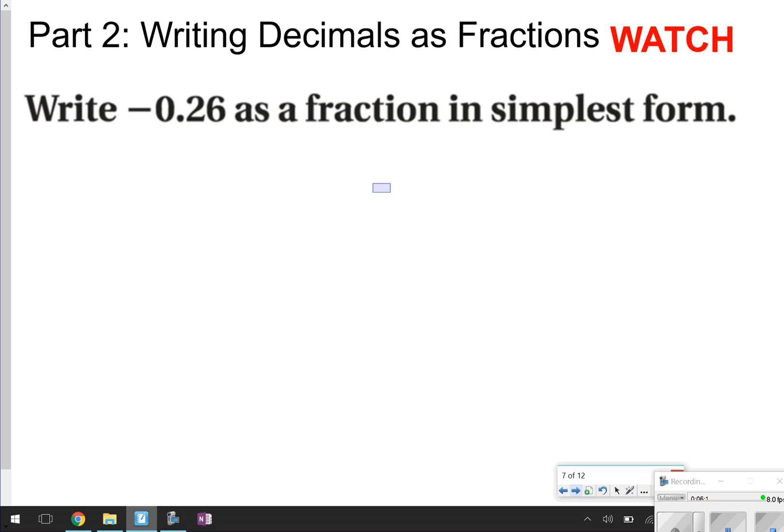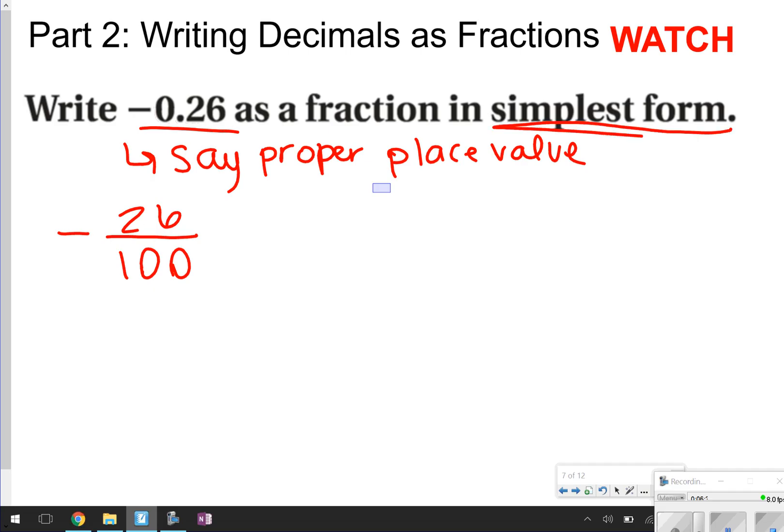So this is the next part, part 2, is writing decimals as fractions. Again, you're just watching here. This is really easy, because you're essentially just going to say this decimal in its proper place value. So, negative 0.26 in proper form would be negative 0 and 26 hundredths. Negative 0 and 26 hundredths can be written as a fraction, 26/100. Once you write as a fraction, all fractions have to be in simplest form, and that just means you've got to simplify it. Find the numbers that have both 26 and 100 in common. I have an easy one for us, since they're both even. I can divide these both by 2. 26 cut in half is 13, 100 cut in half is 50. No other factors can go into 13 and 50. So, that's actually going to be my final number, negative 13/50.